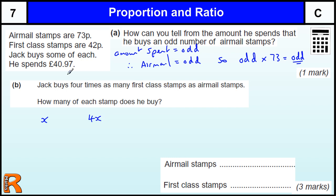And we know that airmail is 73p, so we're going to times the x by 73, and we're going to add that to four times the first class, which is 42. And that, in total, is 40.97.